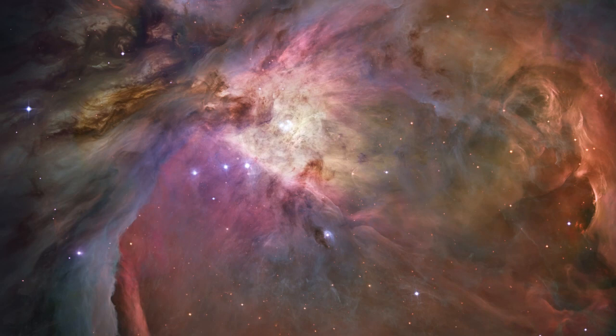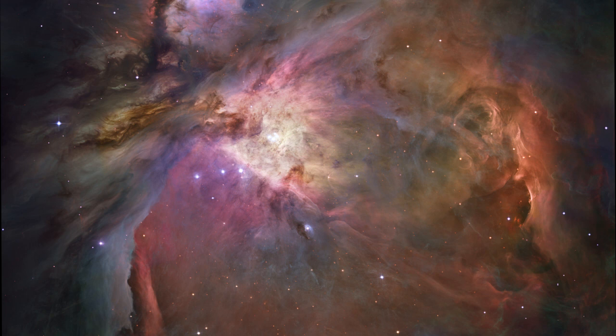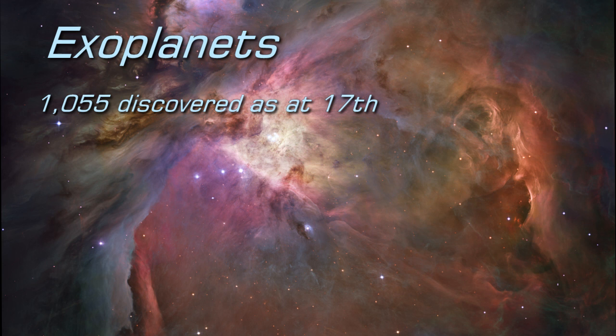Not all of the proplids in the Orion Nebula will go on to form planetary systems, but that's okay, as at 17 December 2013, 1,055 planets have been discovered in 801 planetary systems.